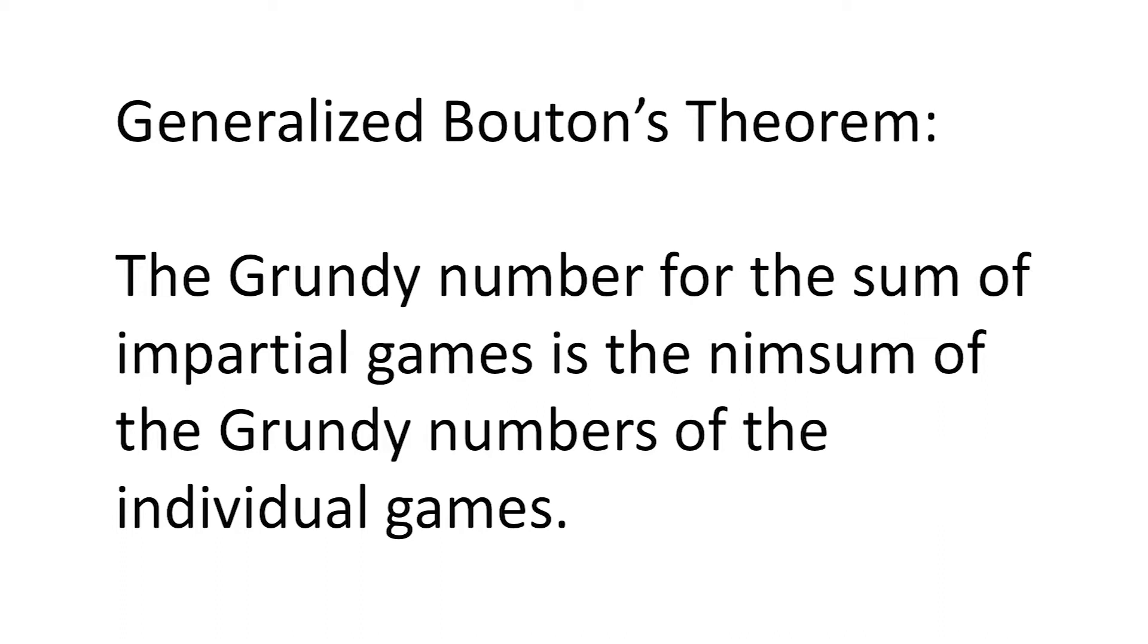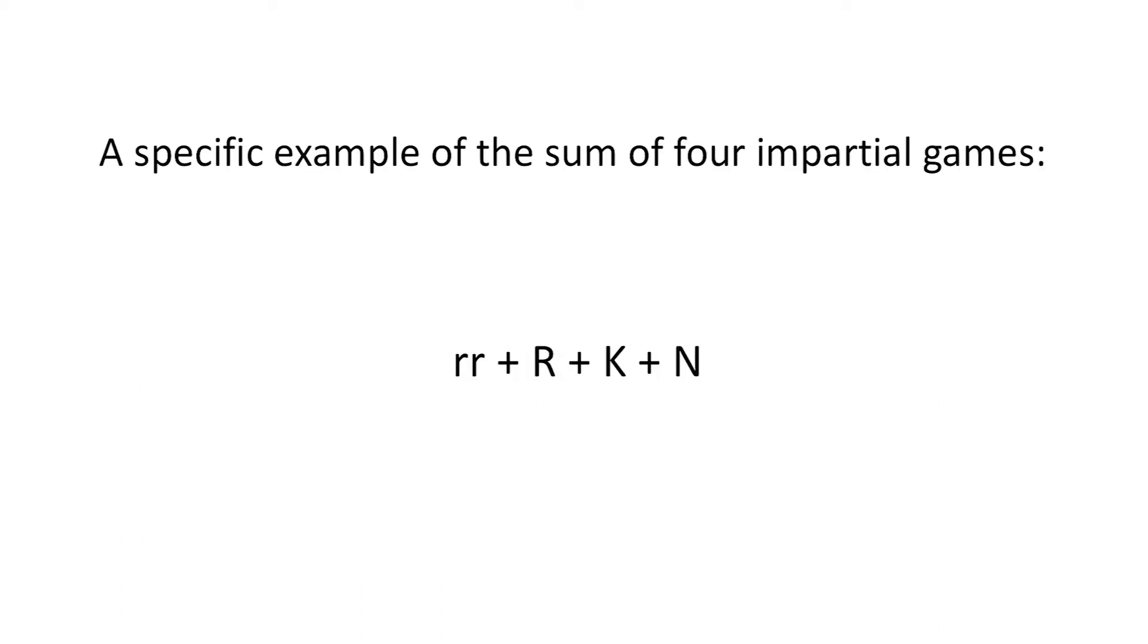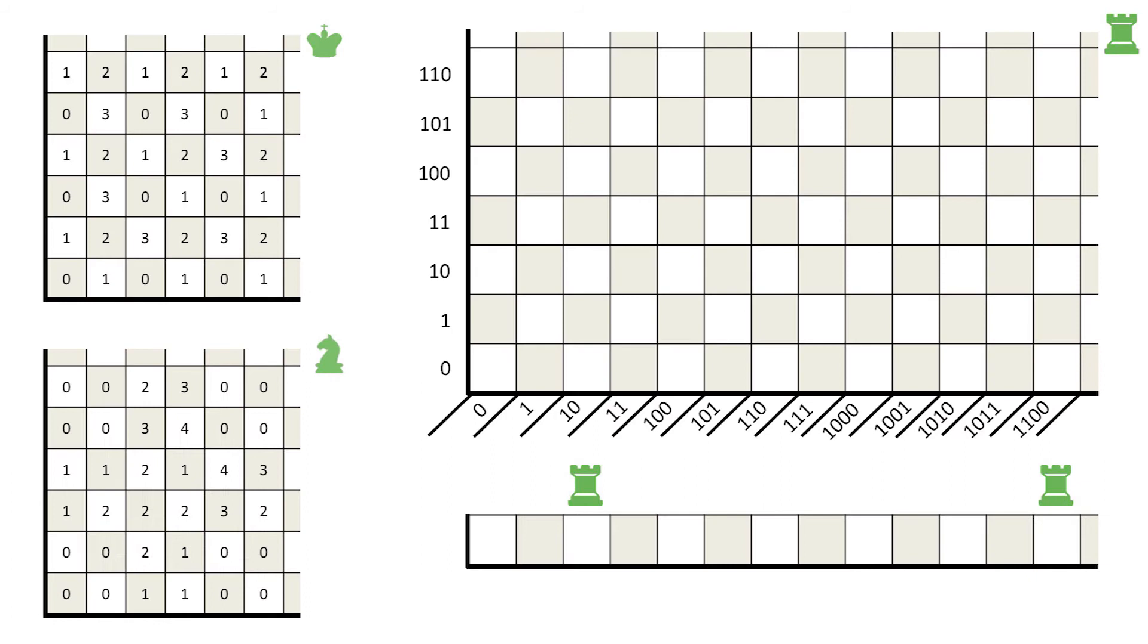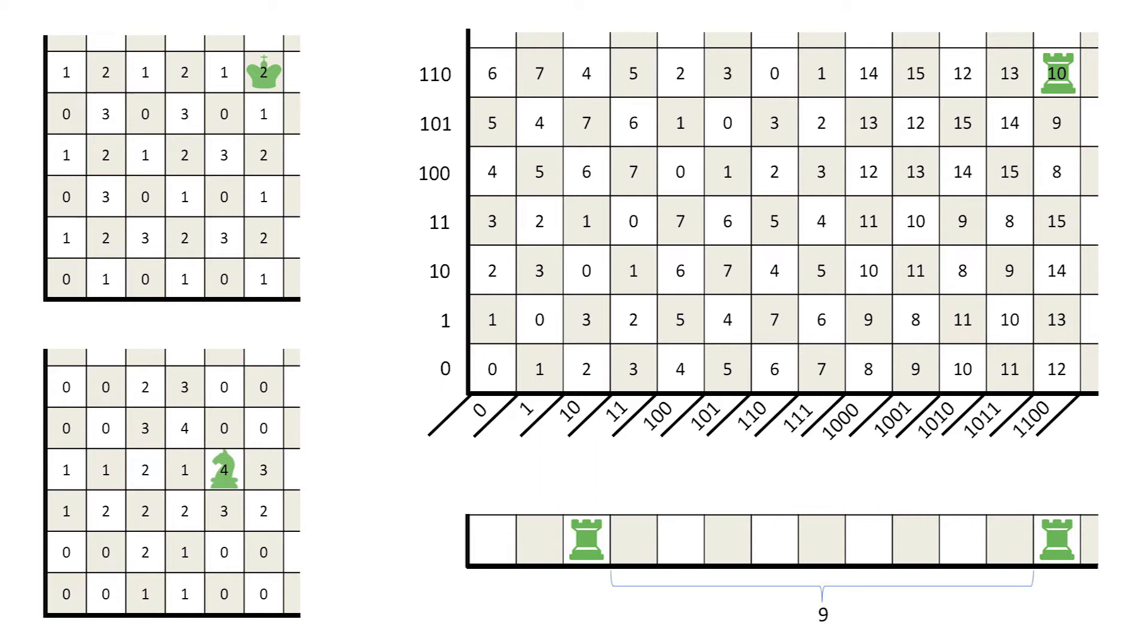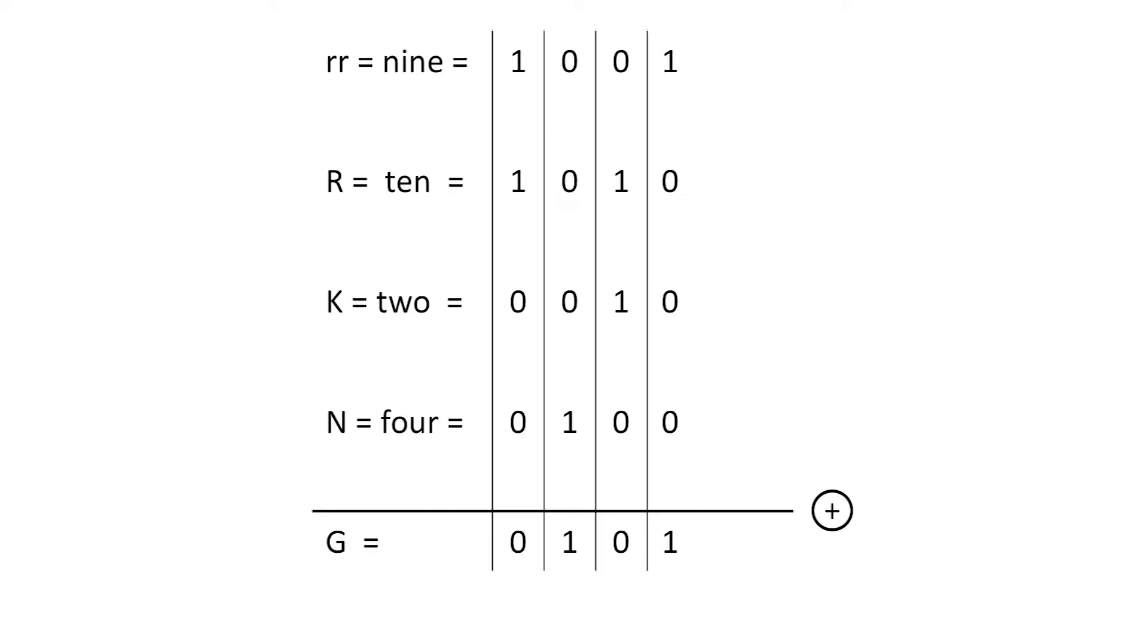Before proving that theorem, let's look at a specific application. Starting in the lower right and going around counterclockwise, we have several games: twin baby rooks, twin baby rooks, grown-up rook, king, and knight. To be very specific, let's consider this particular starting position. The Grundy numbers of the individual games are shown on their boards. We write them in binary and compute their nim sum, which is one four, no twos, and one one, a total of five.